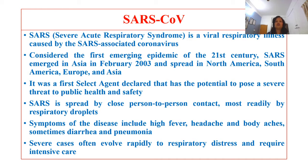First we discuss what was SARS. SARS was Severe Acute Respiratory Syndrome, a viral respiratory illness caused by the SARS-associated coronavirus. It first emerged in the 21st century in Asia in February 2003, and spread to North America, South America, Europe and Asia. It was the first selected agent declared to have the potential to pose a severe threat to public health and safety.